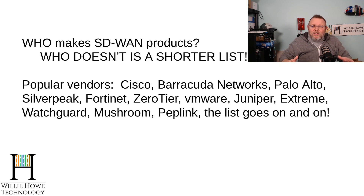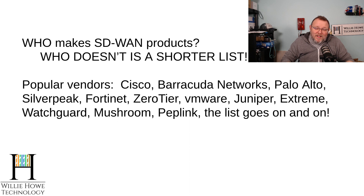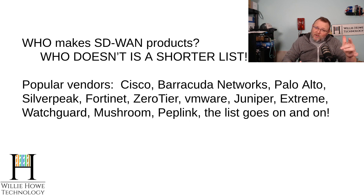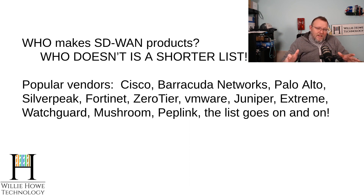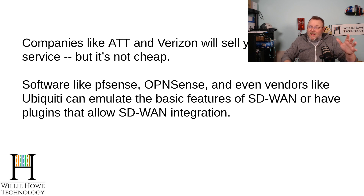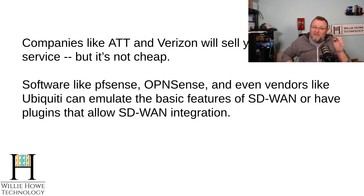So who makes SD-WAN products? The list of who doesn't is probably shorter than the list of who does. Some of the popular vendors are Cisco, Barracuda Networks, Palo Alto, Silver Peak, Fortinet, ZeroTier — yes, ZeroTier can be considered an SD-WAN product — VMware, Juniper, Extreme, WatchGuard, Mushroom Networks, Peplink, and the list goes on and on. SD-WAN is also now popping up as a service. Companies like AT&T and Verizon will sell you SD-WAN as a service, but it is not cheap — very expensive. It rides over their private networks.